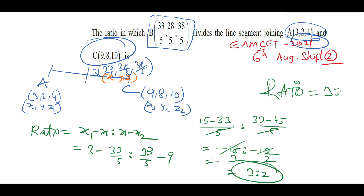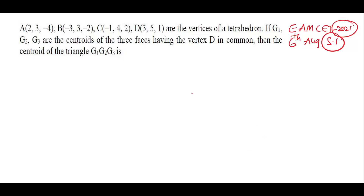Therefore, point B divides the segment in the ratio 3:2. That is the required answer. This is MHT-CET 2021, 6th August, question 61.